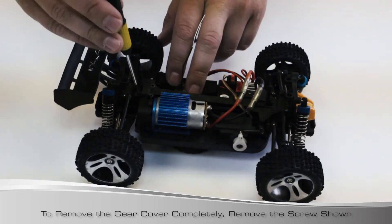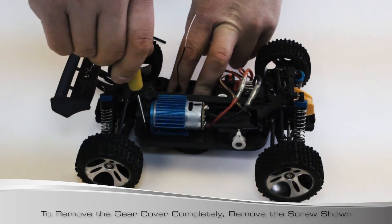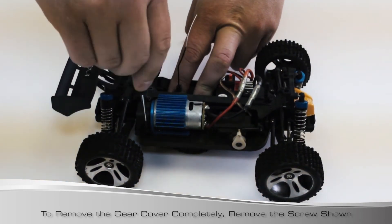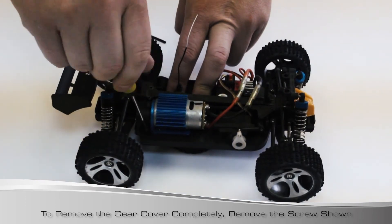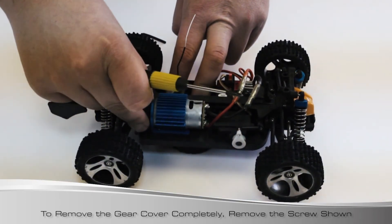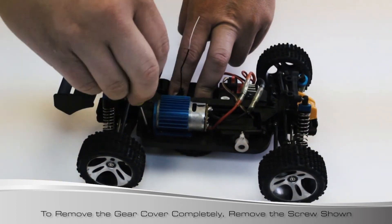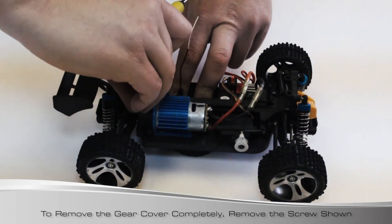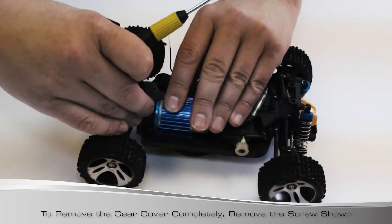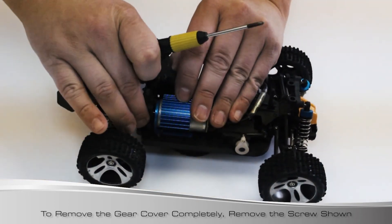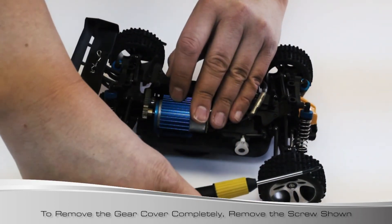The additional screw that you're going to want to do if we're actually going to take the full cover off is the one down here just to the right side of the motor. And it's not as long of a screw as the other ones. That's going to take this cover off that's here.